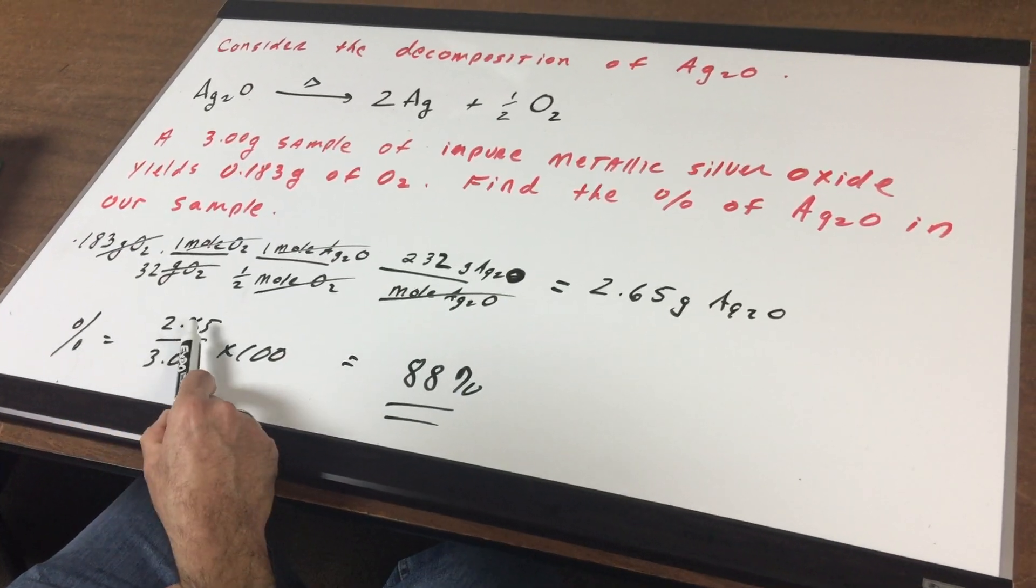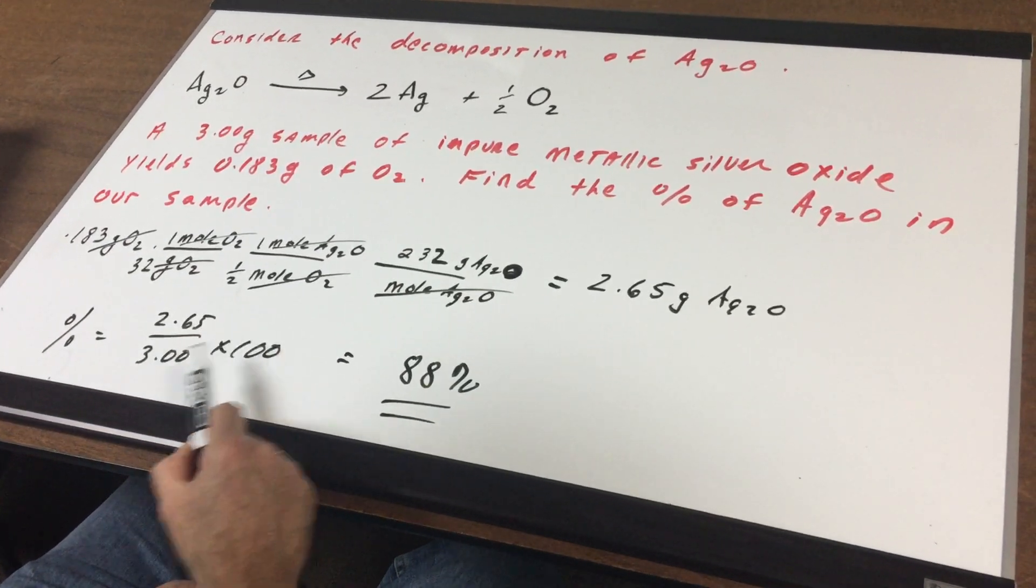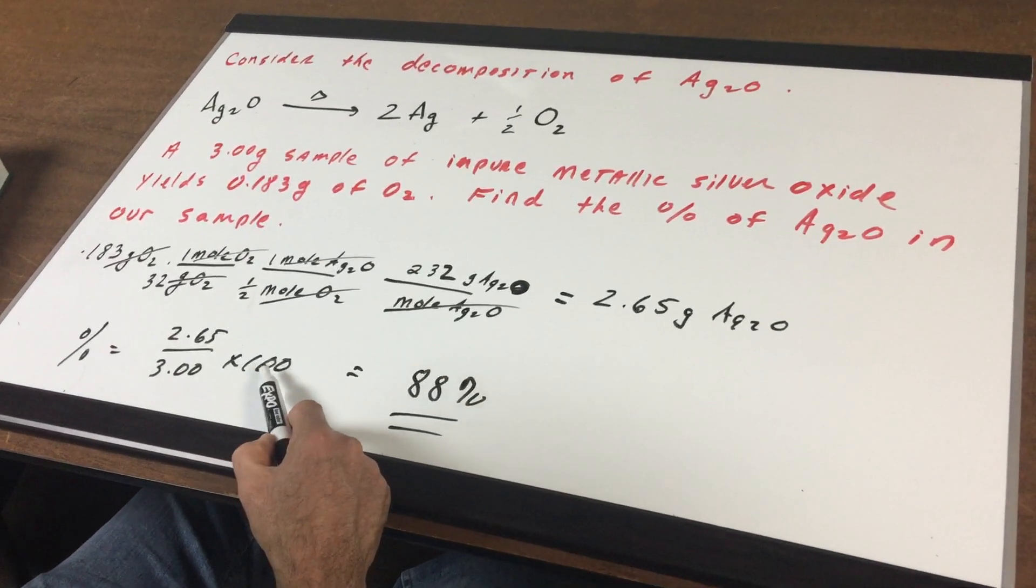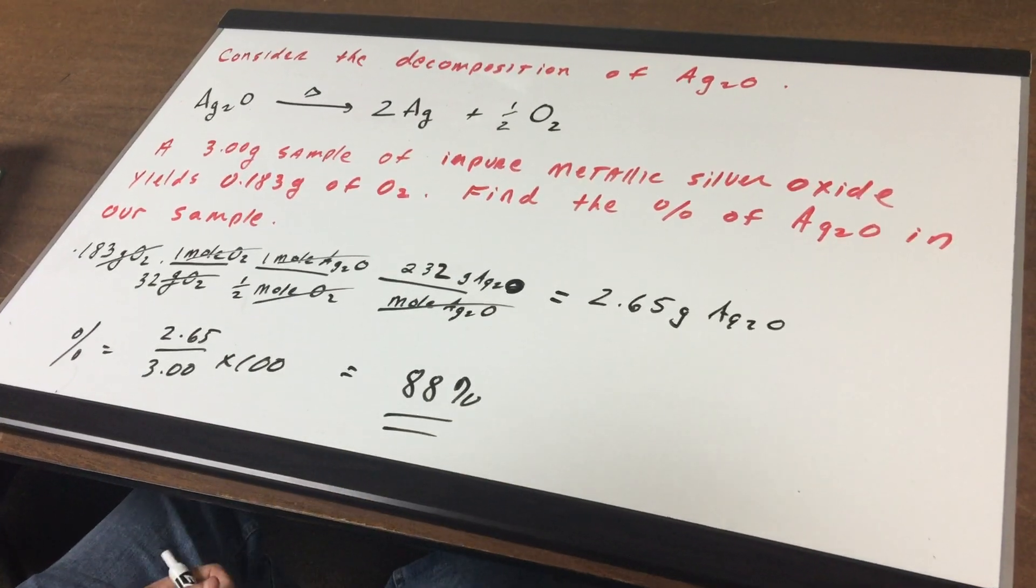The percent is part over the whole times 100. So it's 2.65 divided by 3 times 100, and we get 88%.